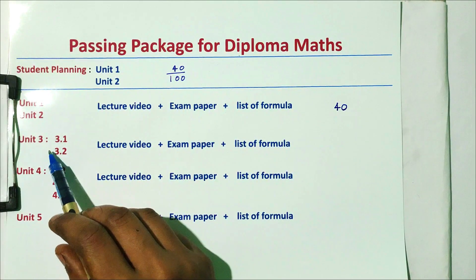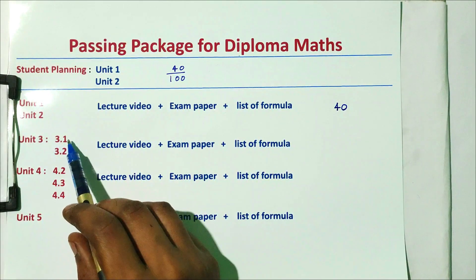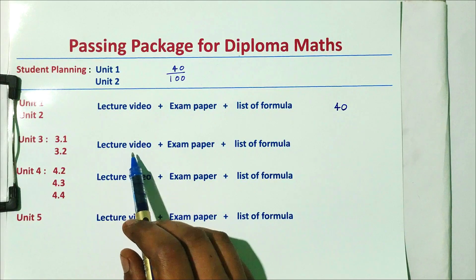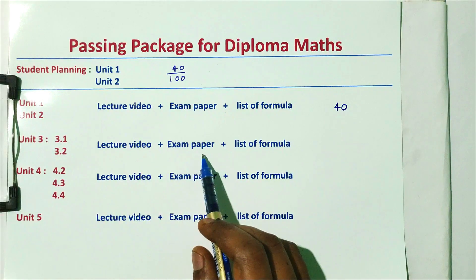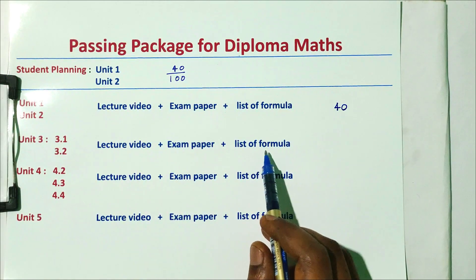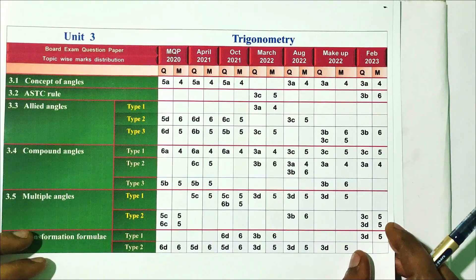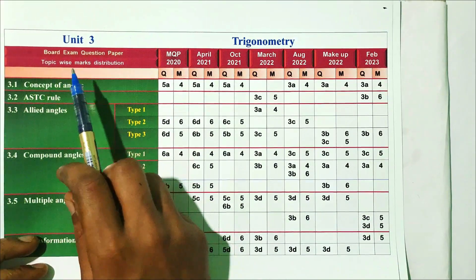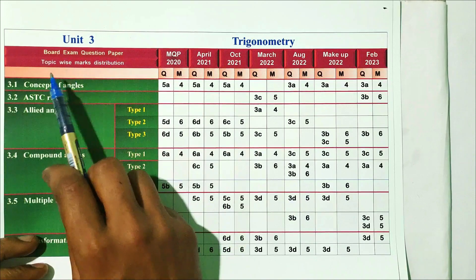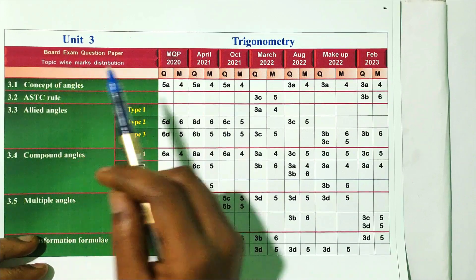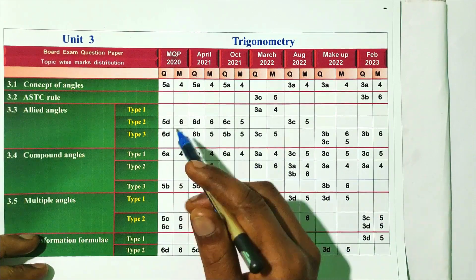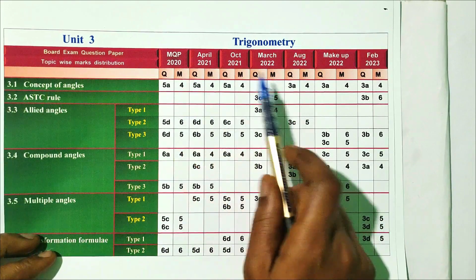Unit 3 covers topics 3.1 and 3.2 — lecture videos, exam question papers, and list of formulas. This is the analysis. Looking at the board exam question papers and topic-wise marks distribution across 6 question papers from 2020, 2021, 2022, and February 2023.